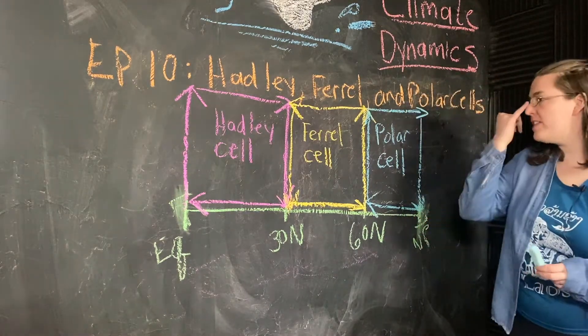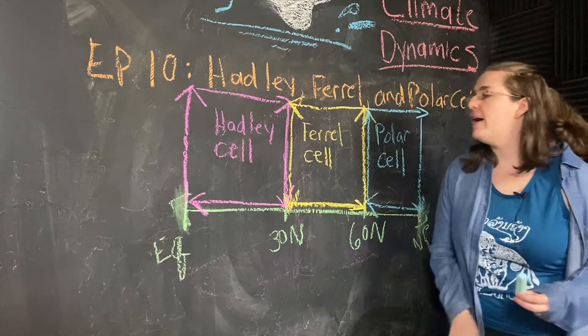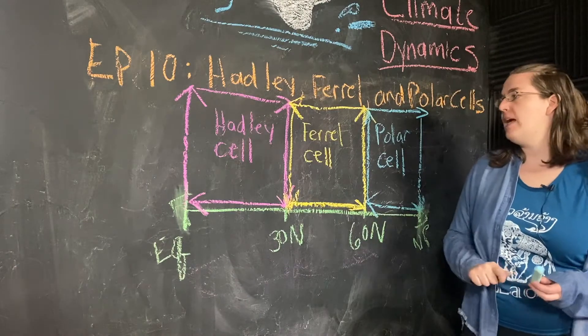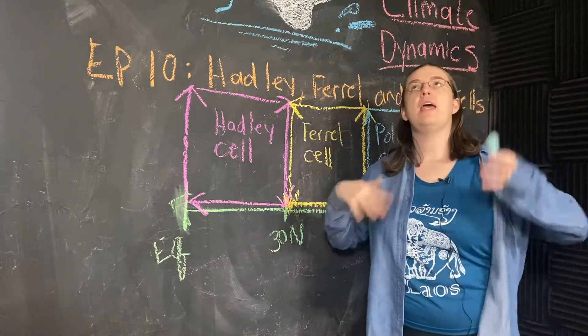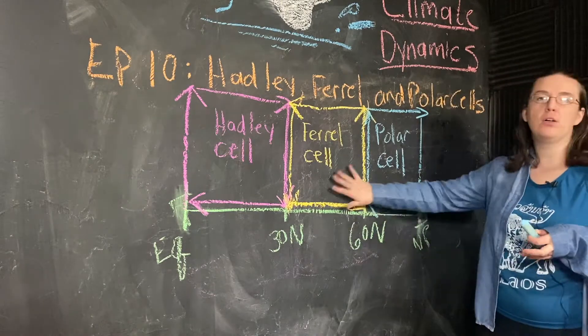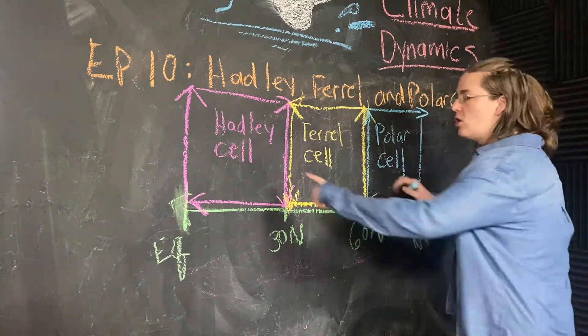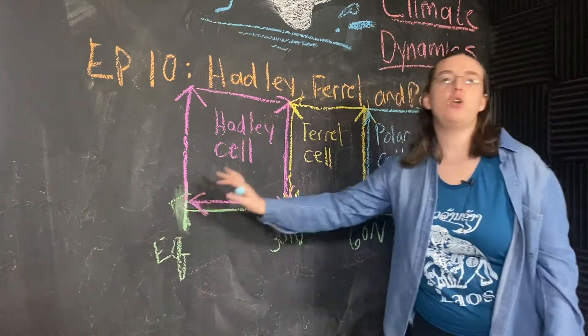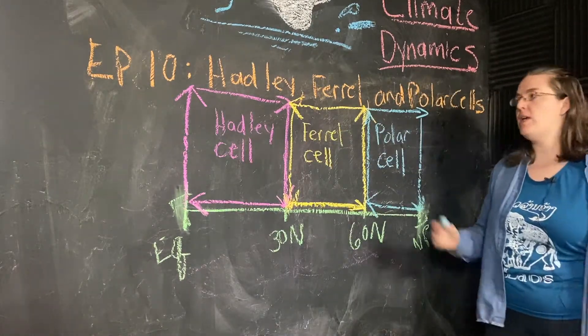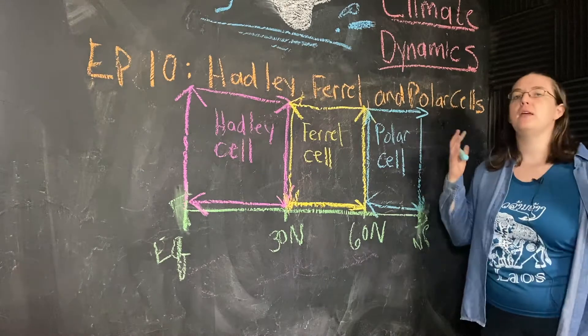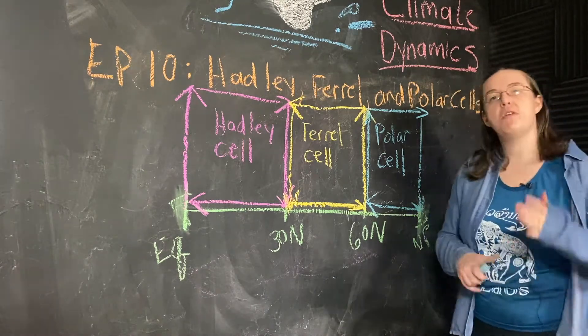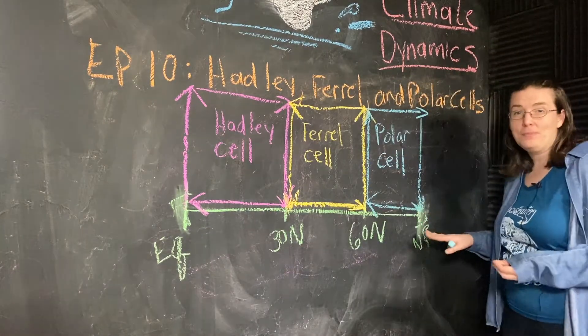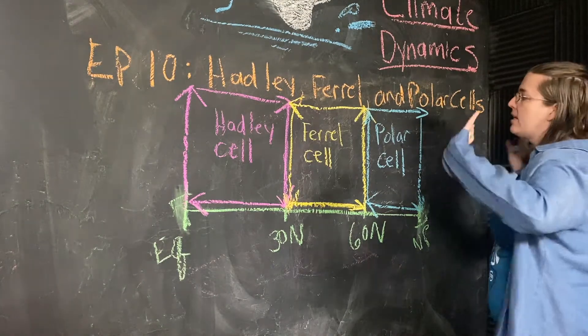We know that the Hadley circulation was driven by this desire to move warm air from the equator poleward, but its size was set by angular momentum. Same is going to be true of the Ferrel and the polar cell. Collectively, what these three circulating cells do is they work to transport heat from the equator to the pole. And we get the three different ones because we are balancing conservation of angular momentum with that driving force of it being hot here and cold here.